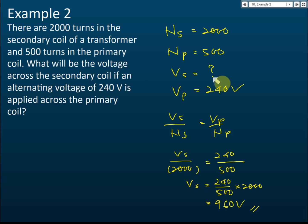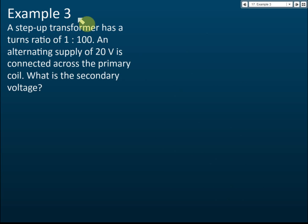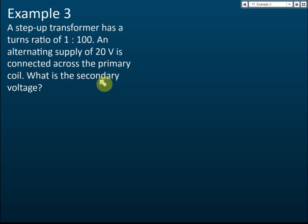Example three: a step-up transformer has a turns ratio of 1 to 100, and an alternating supply of 20 volts is connected across the primary coil. What is the secondary voltage?